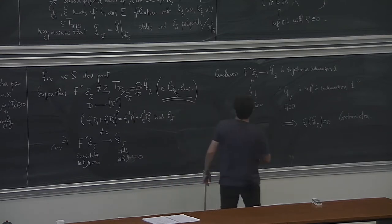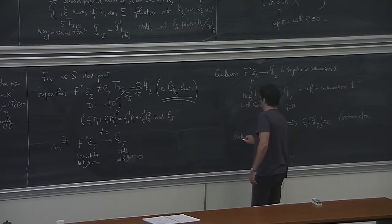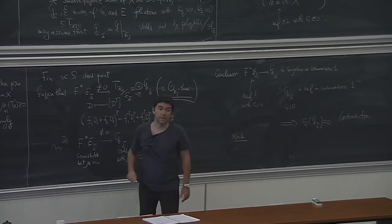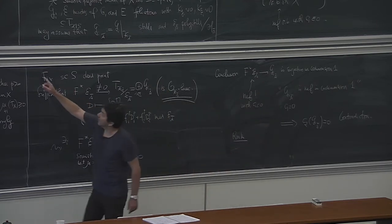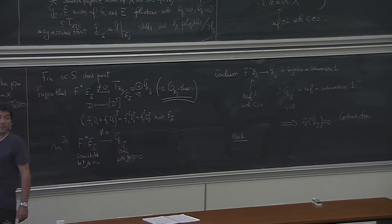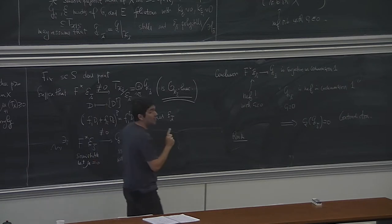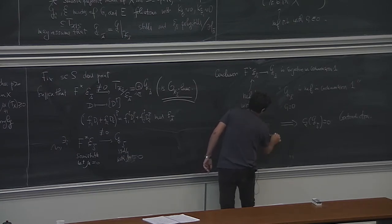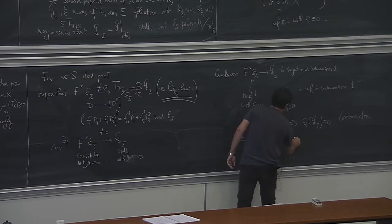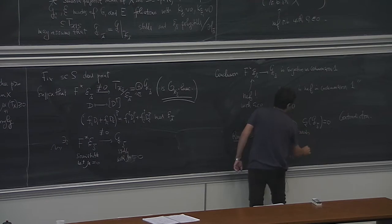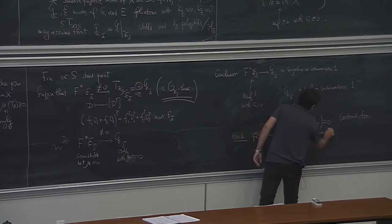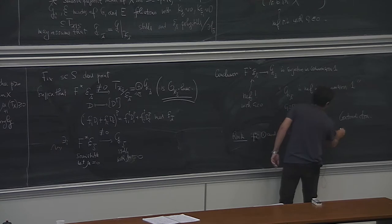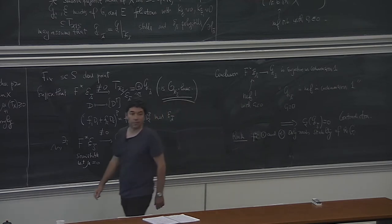Just a remark: for the first and second steps of the proof, we have not used the fact that the G_i are strongly stable. The only property we need is stability. We will only use strong stability at the end of the proof.